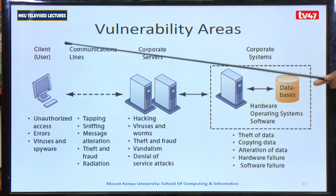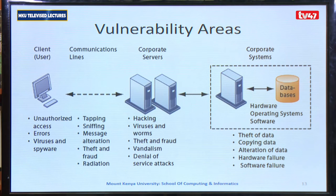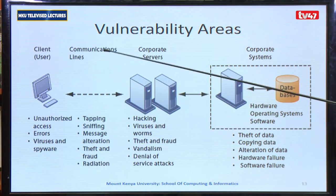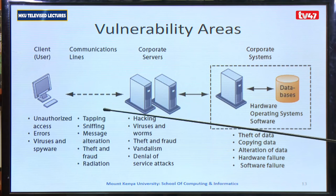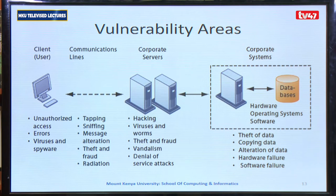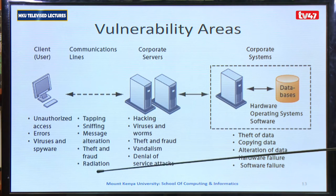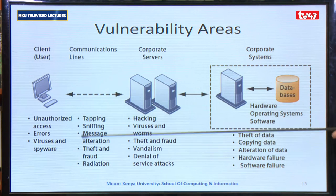The next level is the communication line, which refers to the internet or even the large area network within an organization. When this is compromised at the communication level, the following vulnerabilities occur: tapping, sniffing, message alteration, theft and fraud, and to a greater extent even radiation may occur at this level, making the system compromised.